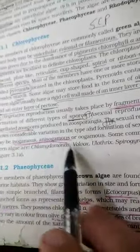Examples are Chlamydomonas, Volvox, Ulothrix, Spirogyra. I have shown you it in the picture.